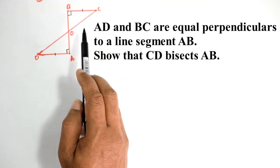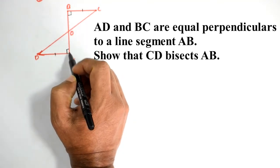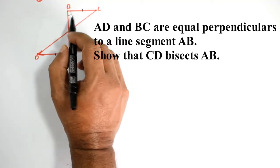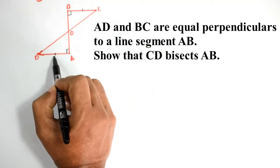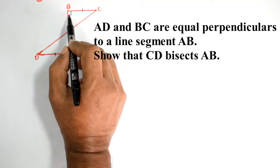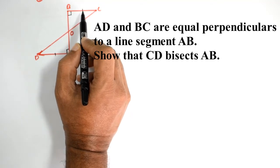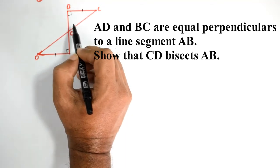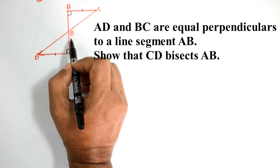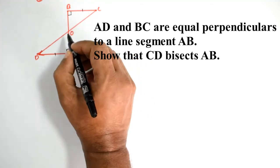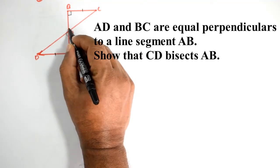Now here we have two equal sides. We will try to pick this triangle in the middle of the triangle. Our main line is the right triangle in the middle. These are equal to each other. The angle is equal to the other angles.